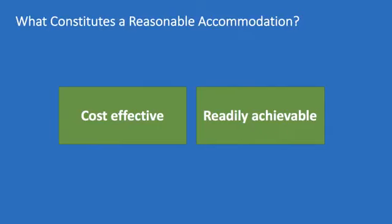What constitutes a reasonable accommodation? In order for an accommodation to be deemed reasonable, it has to be two things: cost effective and readily achievable. Cost effective means it has to be affordable for the business based on their budget or financial status — it can't place undue hardship on the company, meaning it can't have a negative effect on their ability to sustain operations. Readily achievable means the accommodation can be completed without too much difficulty and is fairly easy to accomplish. This component is more about ease and time than financial ability.